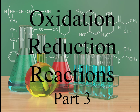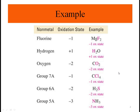I want to show you some examples in oxidation-reduction reactions. This table shows different examples for non-metals and their oxidation states. For example, fluorine is minus one — as you see here, we have MgF2; Mg is plus two and we have two atoms of fluorine, so it's going to be minus one.